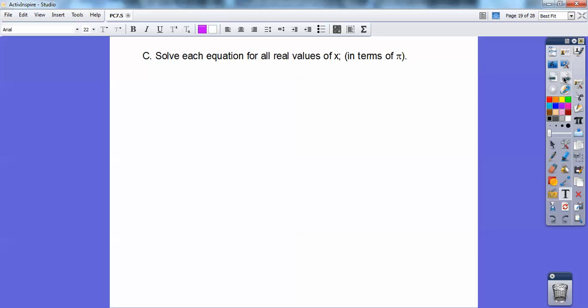Okay, so this one says solve each equation for all real values. So they don't want it in just one complete revolution. They want to keep going around and around and around. So I'll show you that at the end right here. Remember secant squared? Secant squared equals one plus tangent squared. So I'm going to go ahead and replace this.